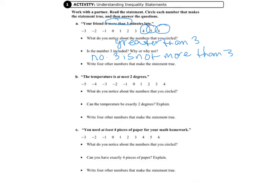So the next question is, write four other numbers that make the statement true. So we're going to write four other numbers. So let's just write the next four numbers. Seven, eight, nine, and ten.